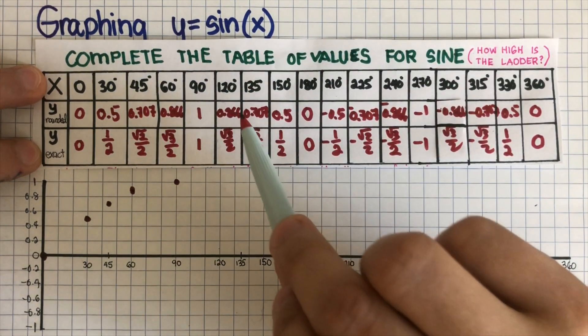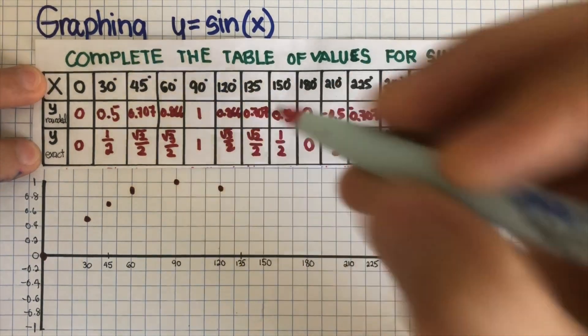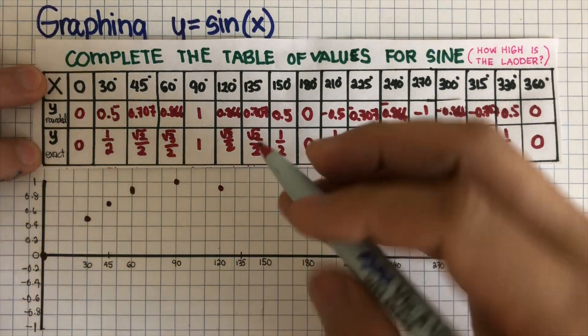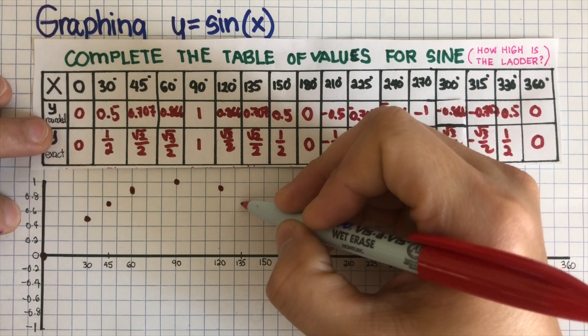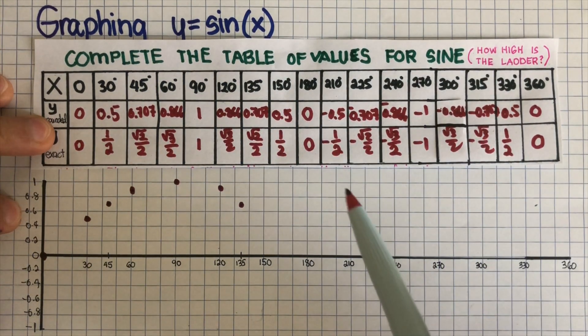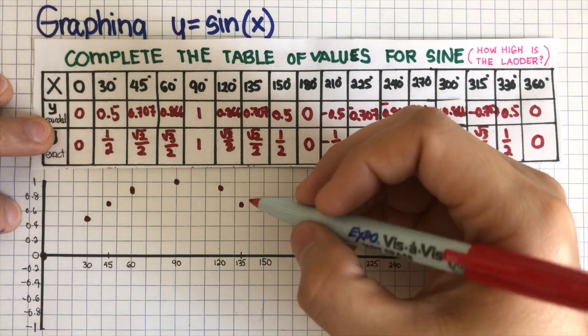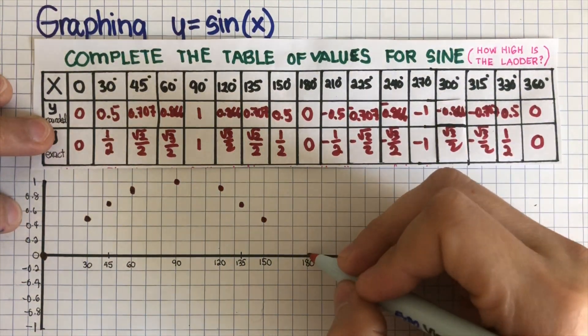And then 120 is 0.866, it's going to be here. And then 135 is 0.707, so 0.707 is somewhere around here. And then 150 is 0.5, so it's going to be here. And then 180 is 0.